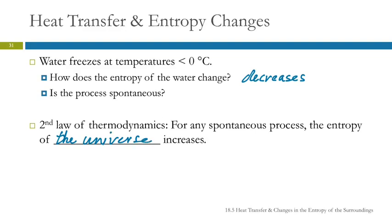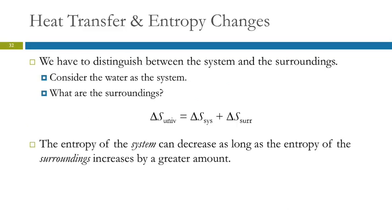When the water is freezing below zero degrees Celsius and its entropy is decreasing, does that mean it's not spontaneous? No — we know it is spontaneous. It's happening in your freezer at home. You put water in there, it's below zero degrees Celsius, the water freezes. It's spontaneous. Because the entropy of the universe is increasing — the entropy of that system is decreasing, but the entropy of the universe is increasing. So we have to distinguish between system and surroundings.